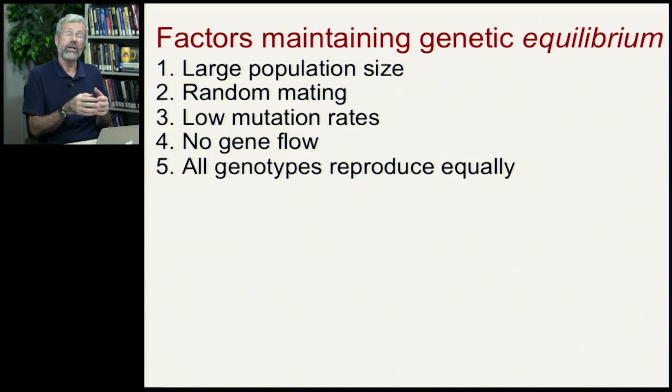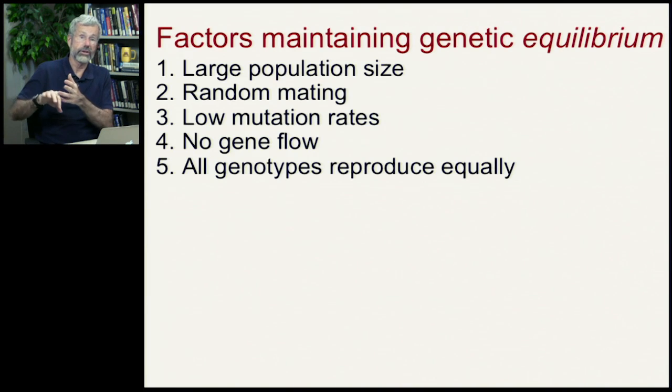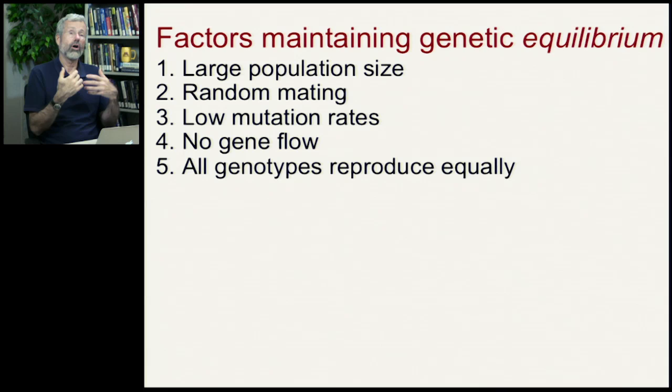Now for this to happen, we need large population size, and that's the flip side of the founder effect. If you have a small population, you can get sudden shifts just by chance, but in a very large population, gene frequencies are not expected to move around at random. Secondly is random mating. If we're not showing any kind of mating preferences that exclude certain genotypes, then the genes can all be enfolding on themselves one generation after the next. Third is if the mutation rate is really low, so that's not going to be a source of change. Fourth is that there's no gene flow between populations. And finally, that all genotypes reproduce equally. That means there's no natural selection going on.